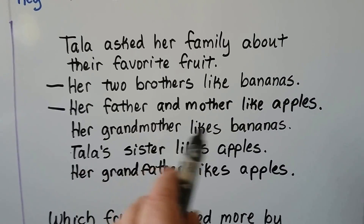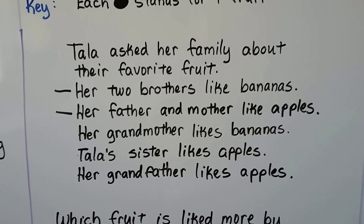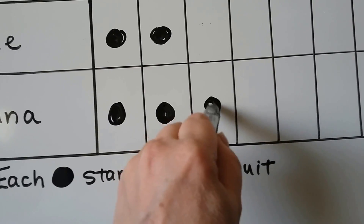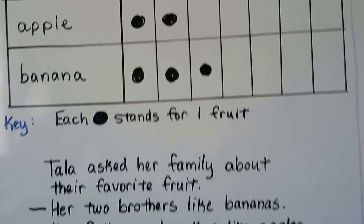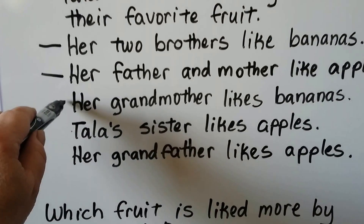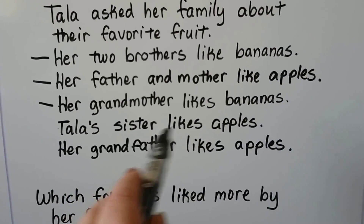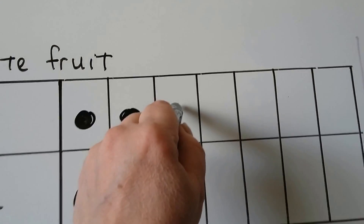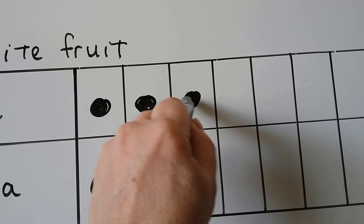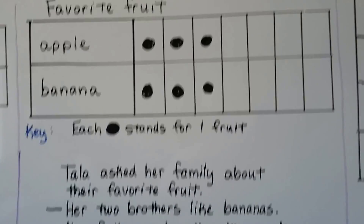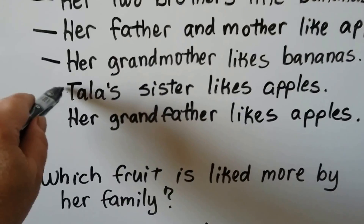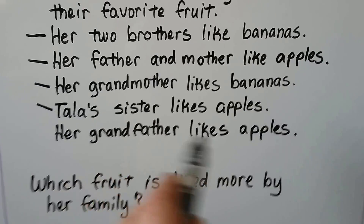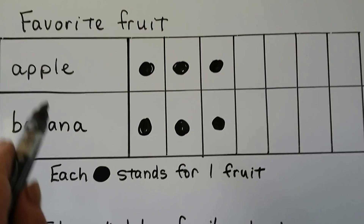Her grandmother likes bananas, so that's one more for banana. Tala's sister likes apples, so that's one more for apple. And the last one: her grandfather likes apples, so we have another one for apples.